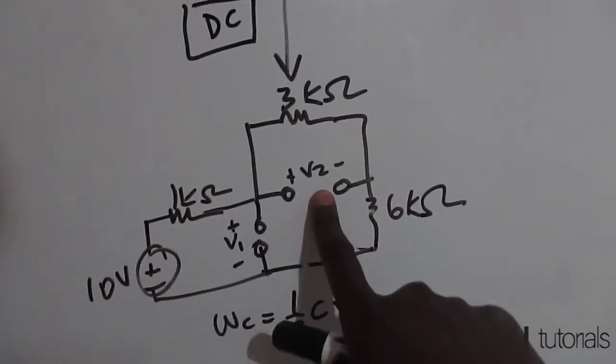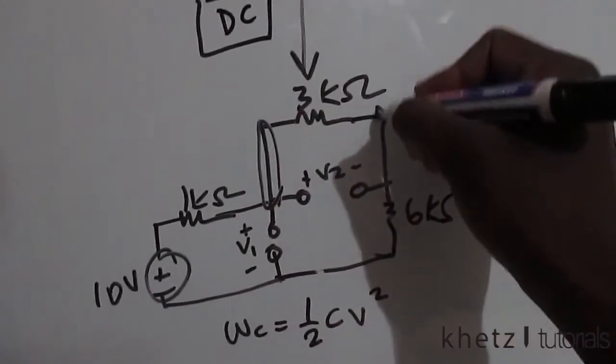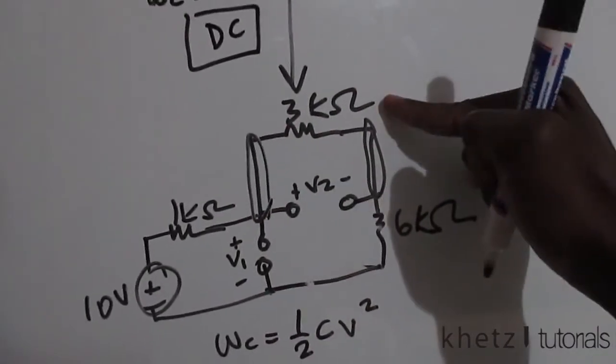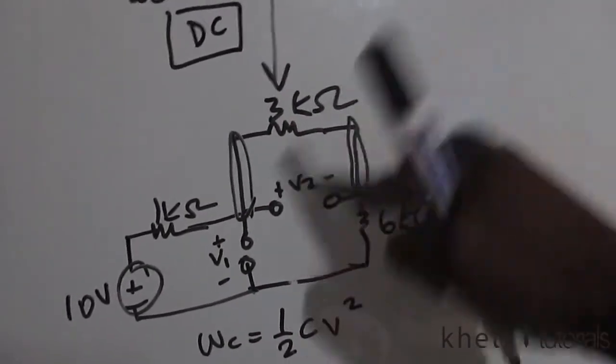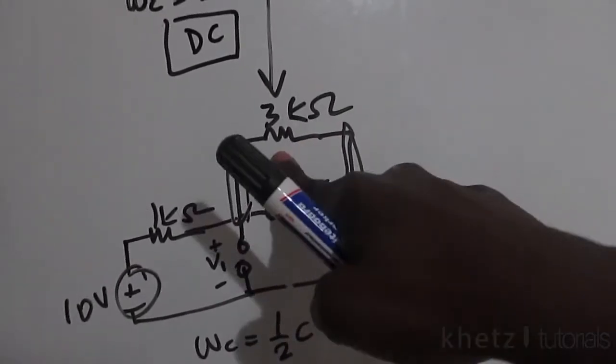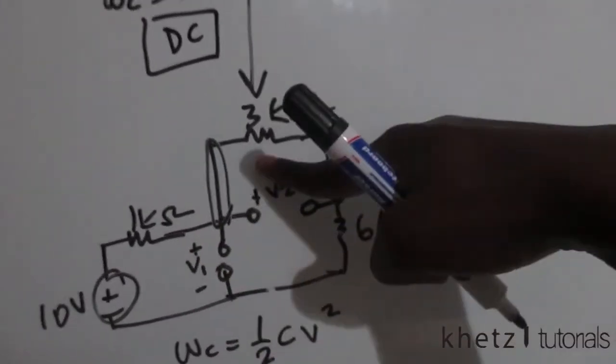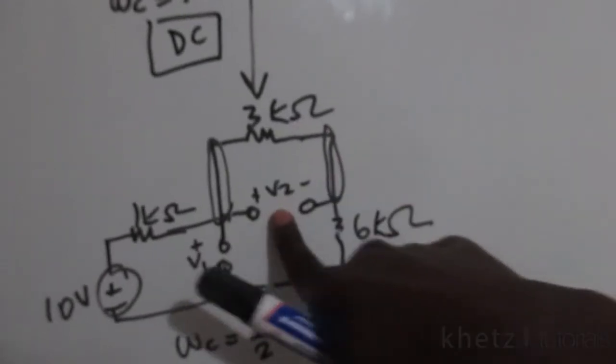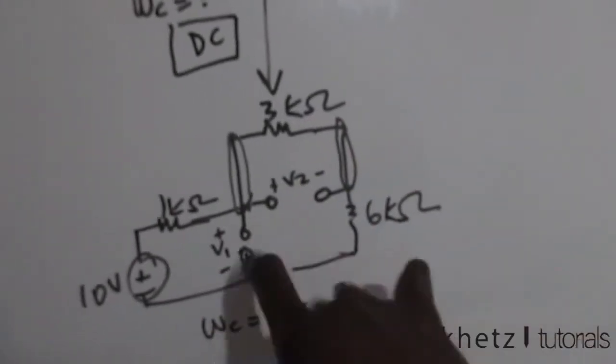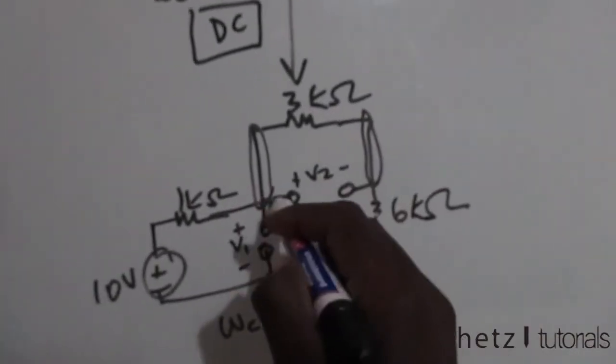This v2 shares two nodes with the 3 kilo-ohm resistor, which means it's in parallel with that. The voltage across the 3k resistor is the same as v2. And v1 shares two nodes with everything else to the right.